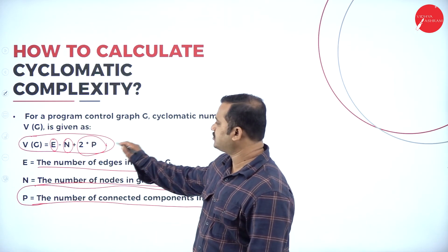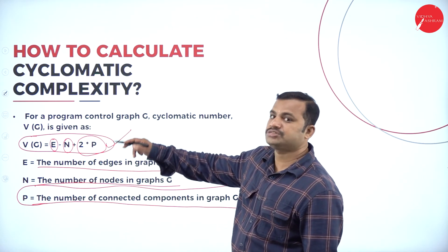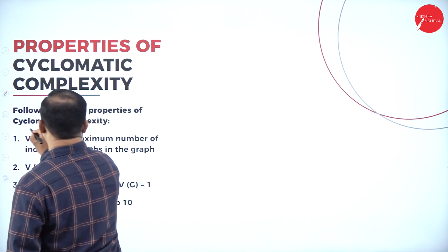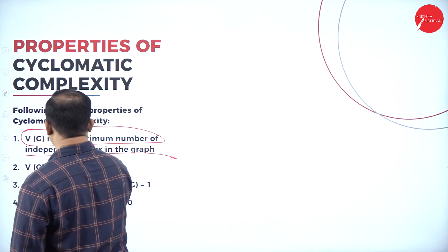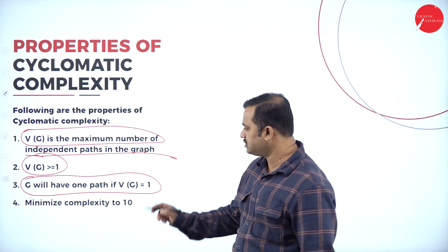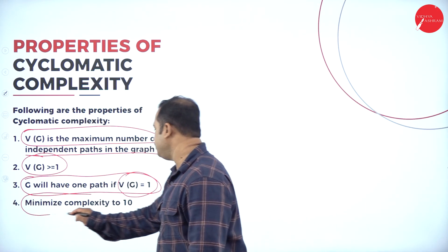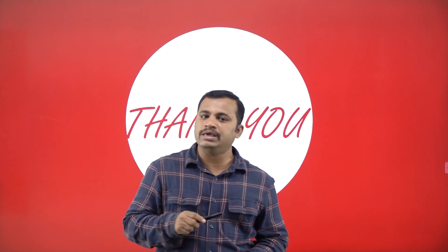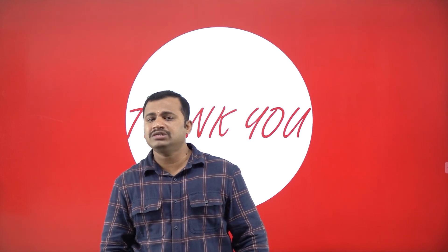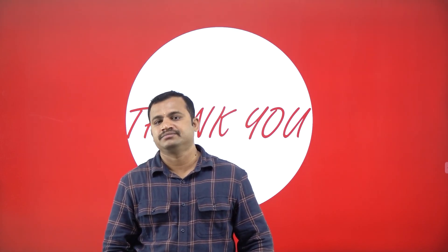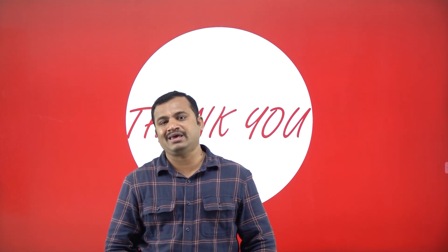The cyclomatic complexity is defined by the formula V(G) = E - N + 2P, where P represents the paths in the graph. V(G) is the maximum number of independent paths in the graph. If V(G) equals 1, there is only one path. We aim to minimize complexity to 10, so that the total difficulty level in program execution is calculated using the concept of cyclomatic complexity, defined by McCabe in 1976.